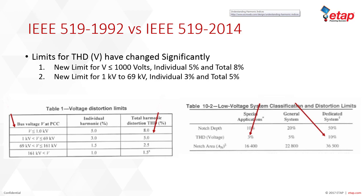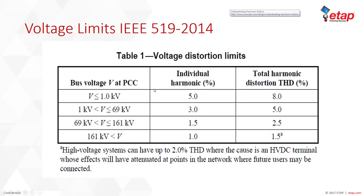So for buses under 1 kV, you now have an increased allowable total harmonic distortion voltage, which increased from 3% to 5%. This has been built into the new version of ETAP, so you'll have a harmonics rulebook containing these new voltage limits. You can apply them not just at the point of common coupling, but with different global settings or specifically at individual locations.